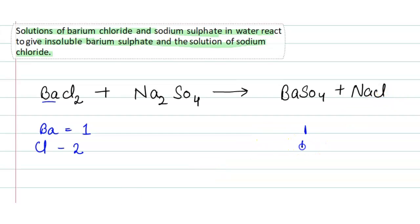Chlorine is 1 in the products. So we will balance by writing 2 here, making this 2NaCl. Now Na is 2 in the reactants.